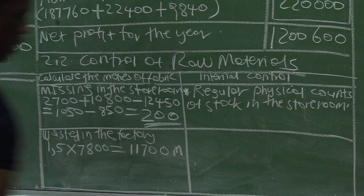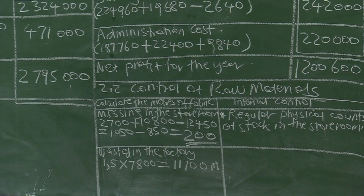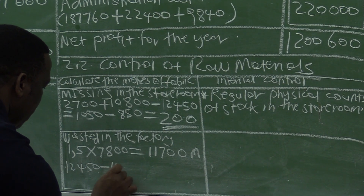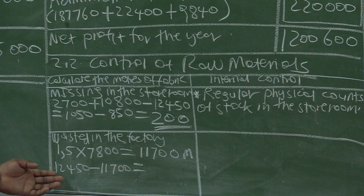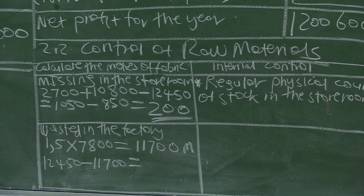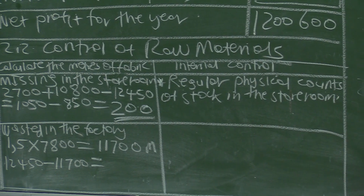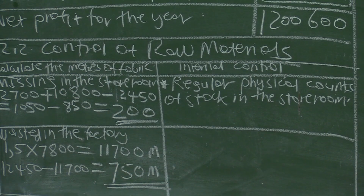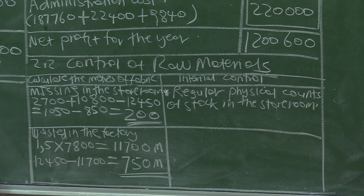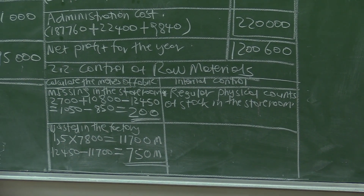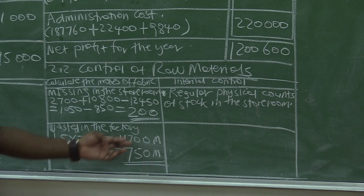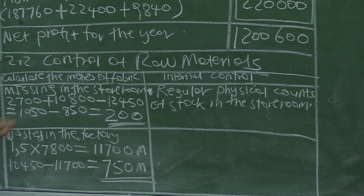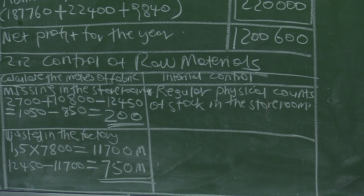Each bag requires 1.5 meters and we produced 7,800 bags. 1.5 multiplied by 7,800 equals 11,700. This business should have used 11,700 meters of fabric. But raw materials issued to the factory totalled 12,450 meters. So 12,450 minus 11,700 equals 750 meters wasted. We used 12,450 instead of 11,700, meaning 750 meters were wasted.